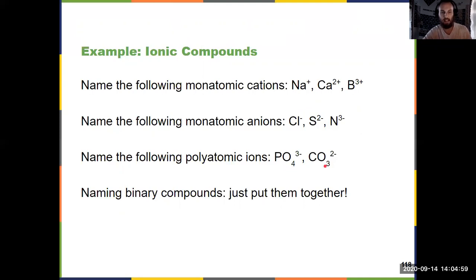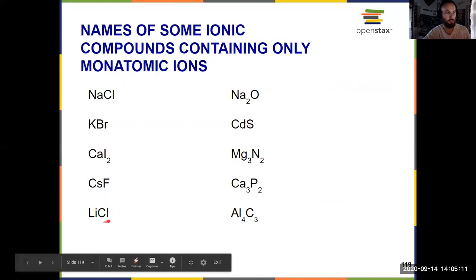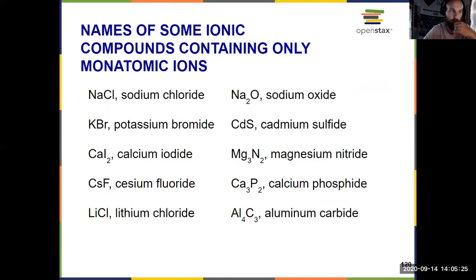To name a compound with a cation and anion together, you just say those two names in a row — the cation and then the anion. Here are some examples: lithium chloride, magnesium nitride, sodium oxide. You can pause the video here and try the others for practice. The answers are on the following slide, and you've got the lecture slides available on Blackboard as well.